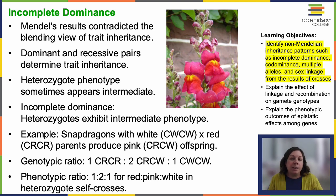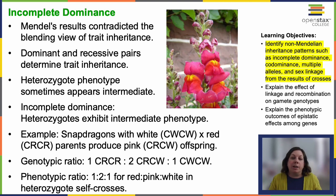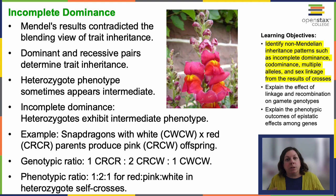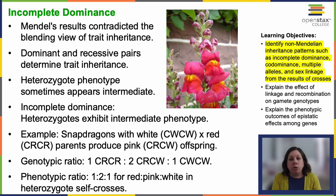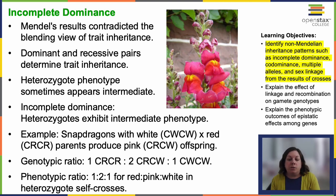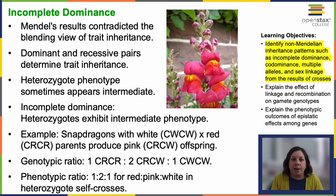The allele for red flowers is incompletely dominant over the allele for white. However, the results of a heterozygous self-cross can still be predicted, just as with Mendelian dominant and recessive crosses — we'll just see a different range. The genotypic ratio would be one homozygous red, two heterozygous incomplete dominance, and one homozygous recessive. So instead of the three-to-one ratio, we see a one-to-two-to-one: red, pink, white.